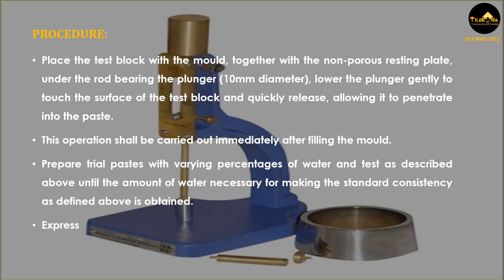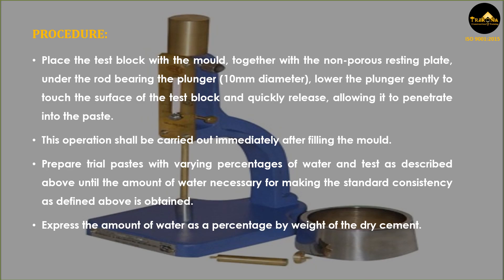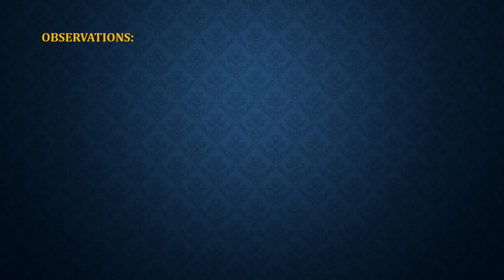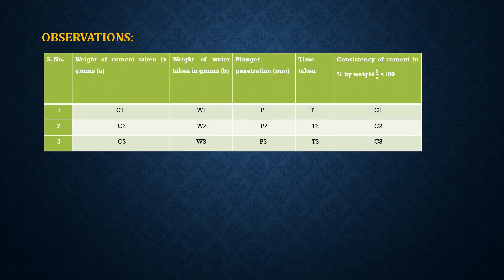Express the amount of water as a percentage by weight of the dry cement. Observations: In the above table, note down the readings obtained and calculate the consistency of cement as described in the table.